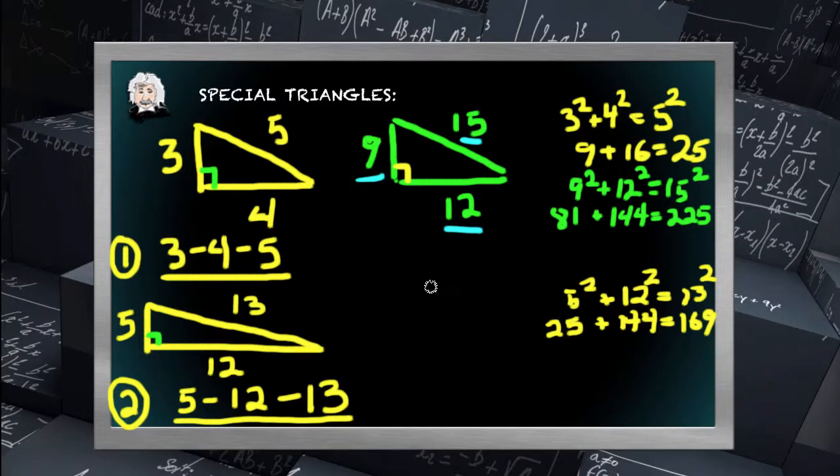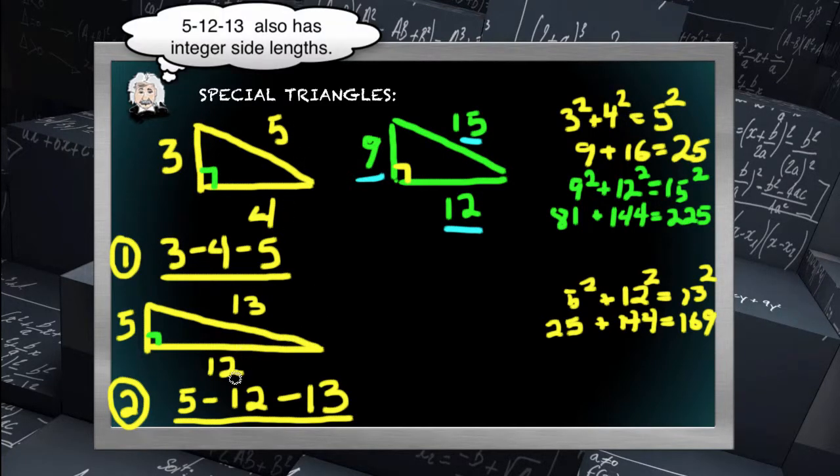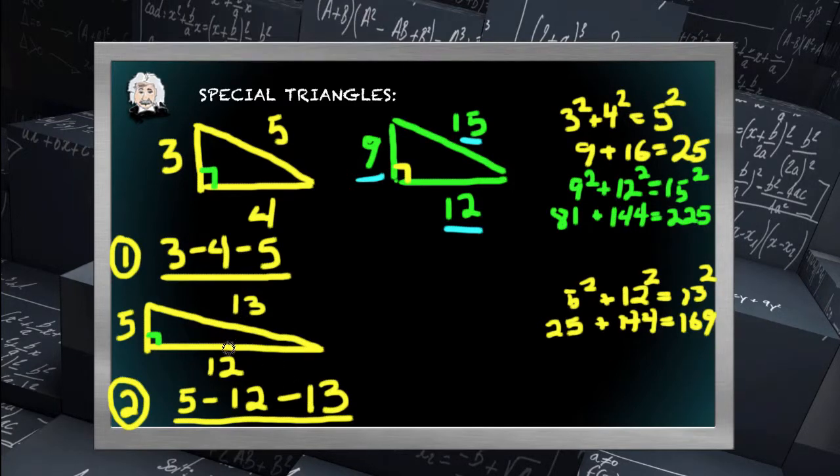There are a few others that seem to crop up more often than not nowadays. For example, the 5-12-13 right triangle. Not as well known, but it is a standard right triangle, and the same idea holds for it. It complies with the Pythagorean theorem. 5 squared plus 12 squared equals 13 squared. 25 plus 144 is 169. It is a right triangle, and if I know three of the four pieces of information, I can solve for the other.